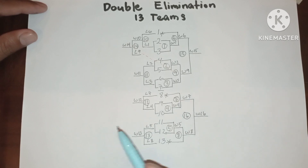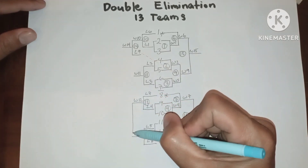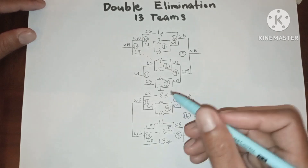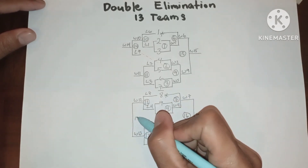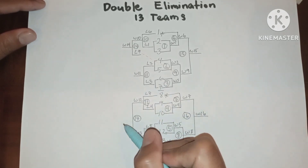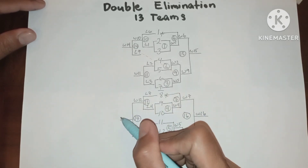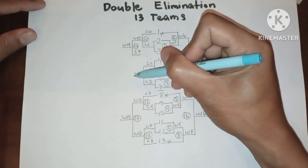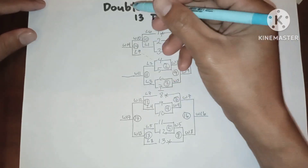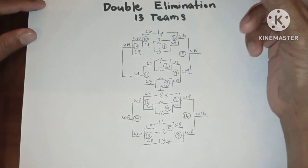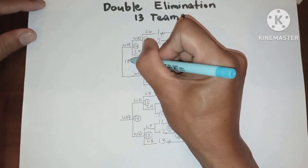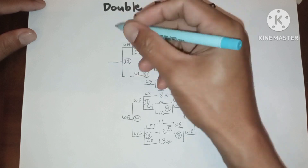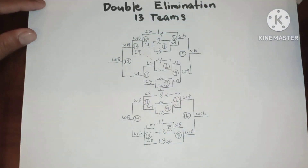Now let's go back to the losers bracket. Winner 12 will be playing against winner 13 in game 17. Let us have the result: winner 17. Now let winner 11 play against winner 14 in game 18. Let us have the result: winner 18.